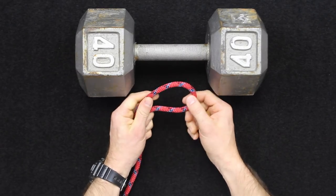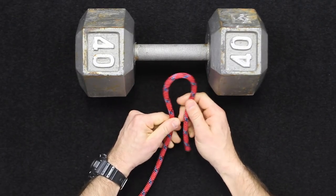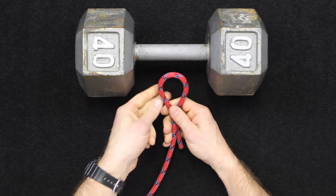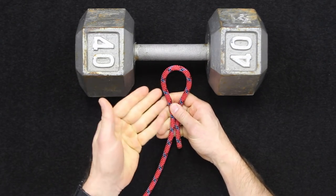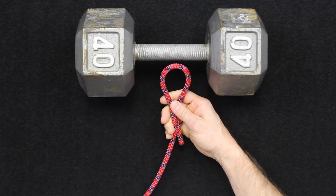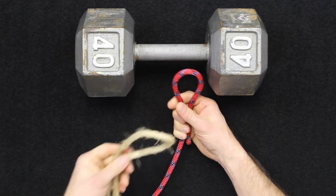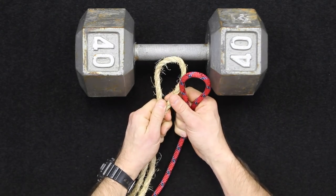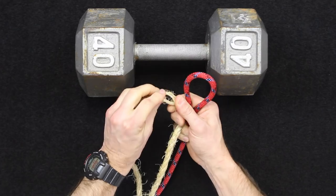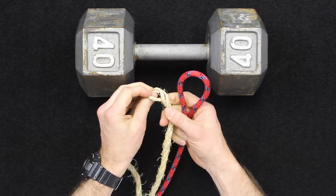So to tie the timber hitch, I first want to talk about synthetic rope versus natural fiber rope. We're going to be tying this with synthetic rope, which means that it's manufactured from nylon or something like that. Natural fiber rope is like this sisal rope here, and it's made from, like the word says, natural fiber.